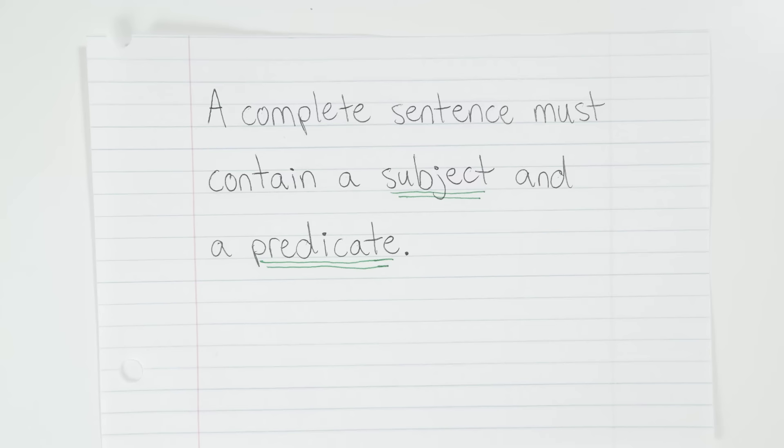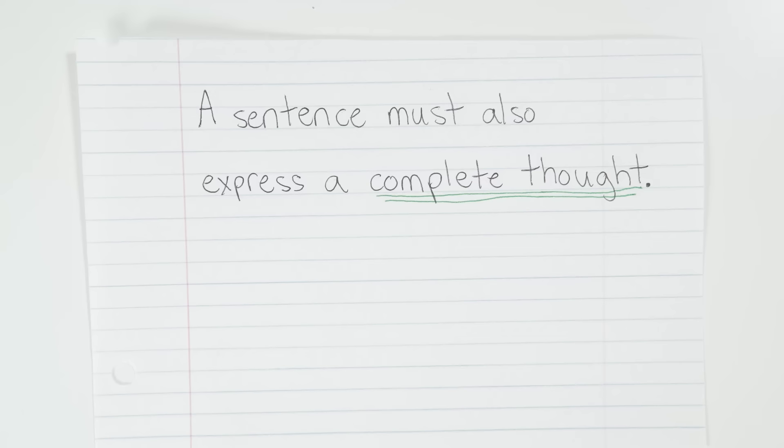If you've watched our lessons on subjects and predicates, you'll already know that a sentence must have both a subject and a predicate in order to be complete. But more than that, a sentence must also express a complete thought. And what does a complete thought mean? Well, it means that you have all of the information you need to understand what is happening. So again, a complete sentence must have both a subject and a predicate, and it must also express a complete thought.